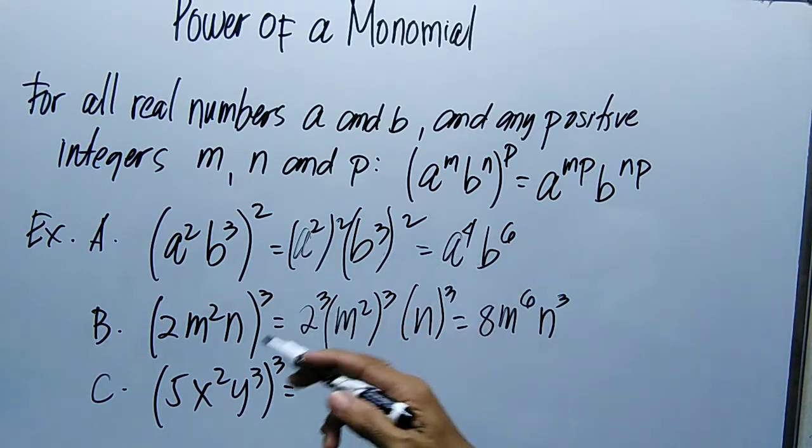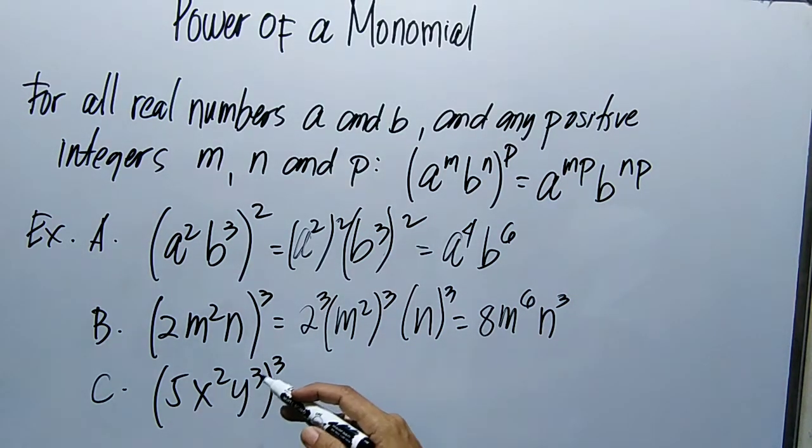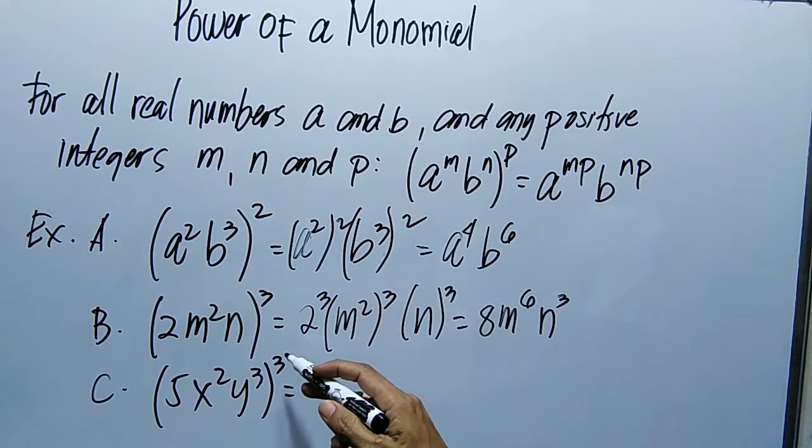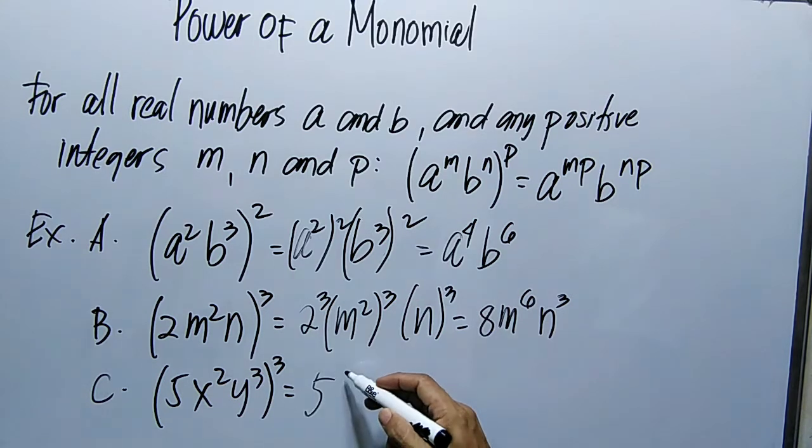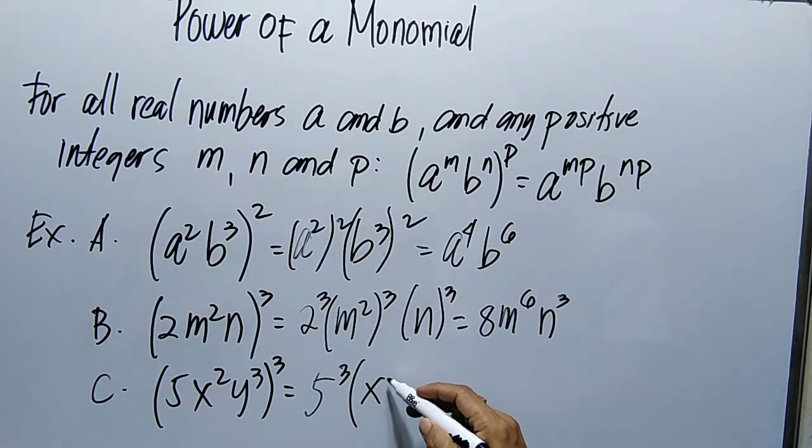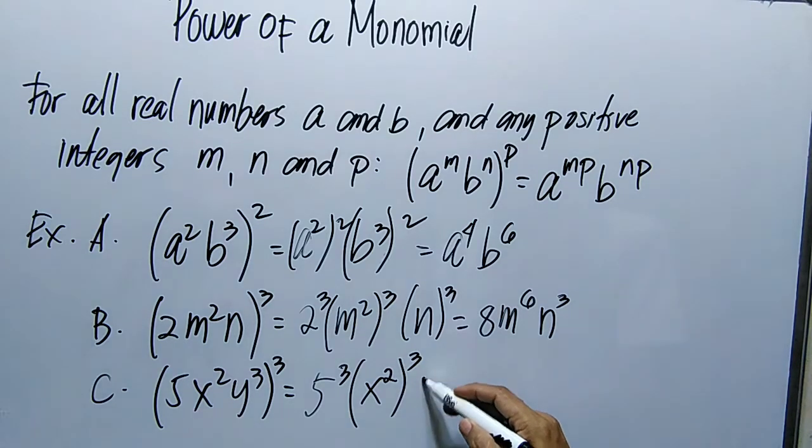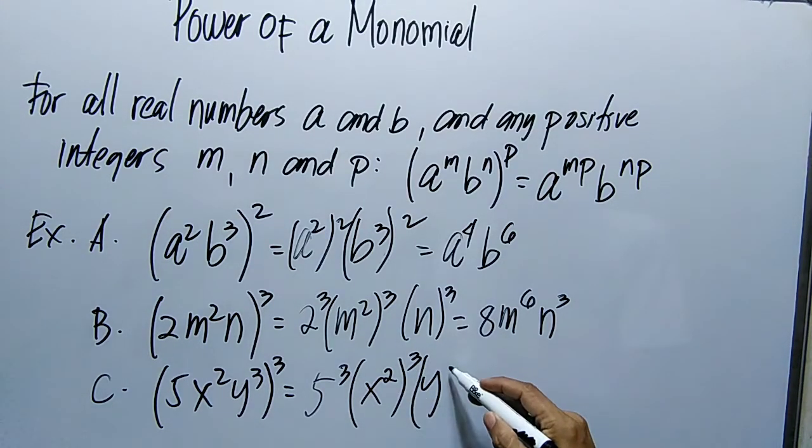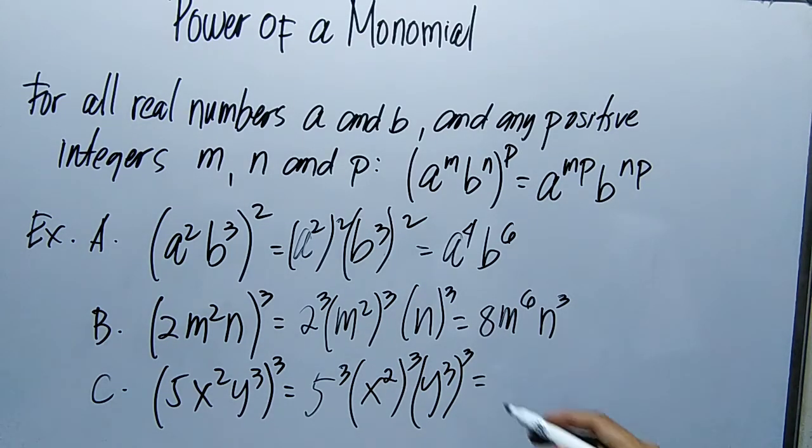So let's proceed to example letter C. The quantity of 5X squared Y cube, the quantity raised to the power of 3. So 5, yung exponent dito is 3. Then si X squared, meron din exponent na 3. Then Y cube, meron din exponent na 3 sa labas.